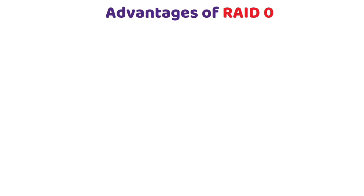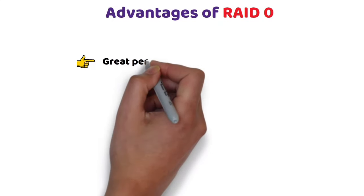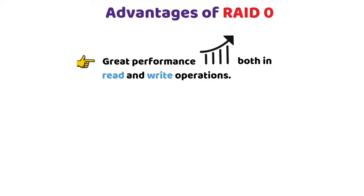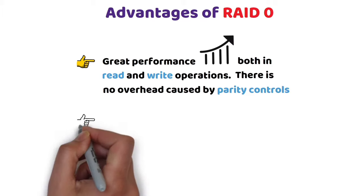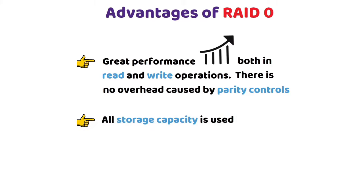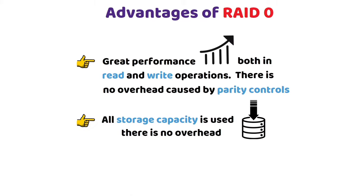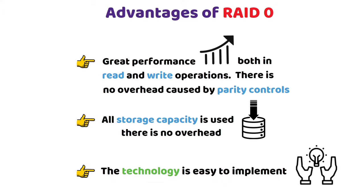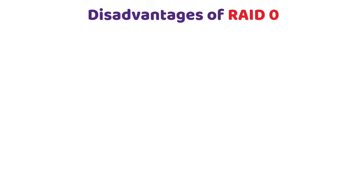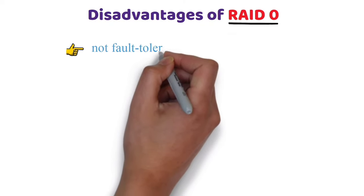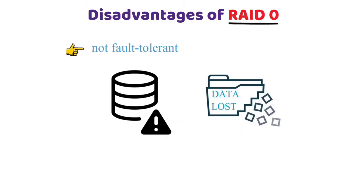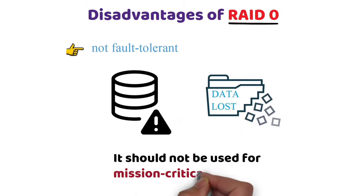Advantages of RAID 0: RAID 0 offers great performance in both read and write operations. There is no overhead caused by parity controls and all storage capacity is used. The technology is easy to implement. Disadvantages of RAID 0: RAID 0 is not fault tolerant. If one drive fails, all data in the RAID 0 array is lost. It should not be used for mission-critical systems.